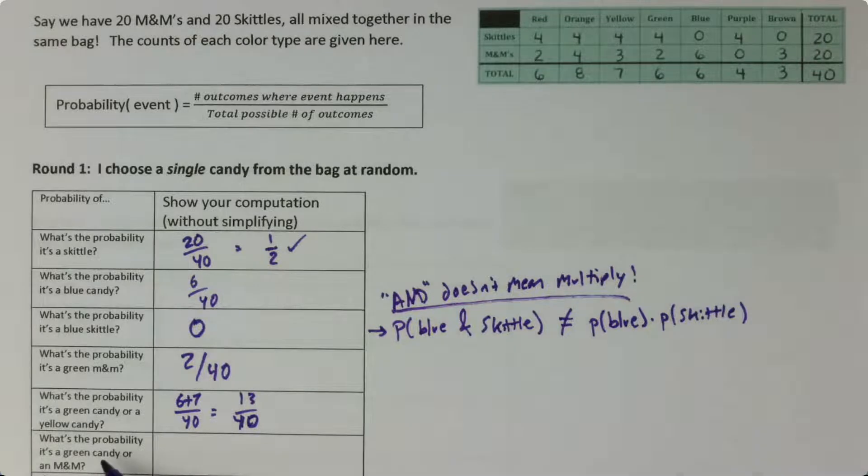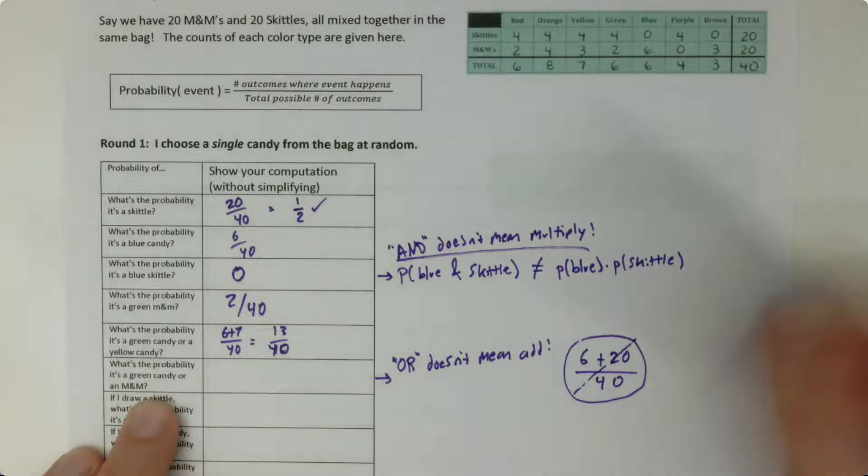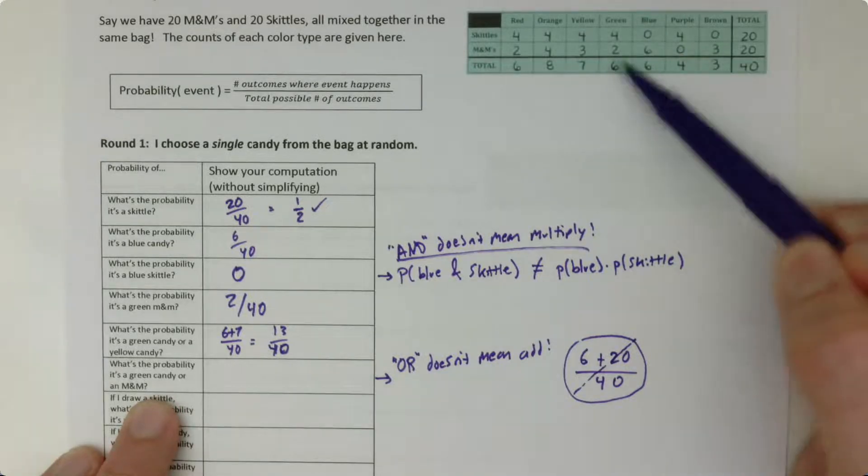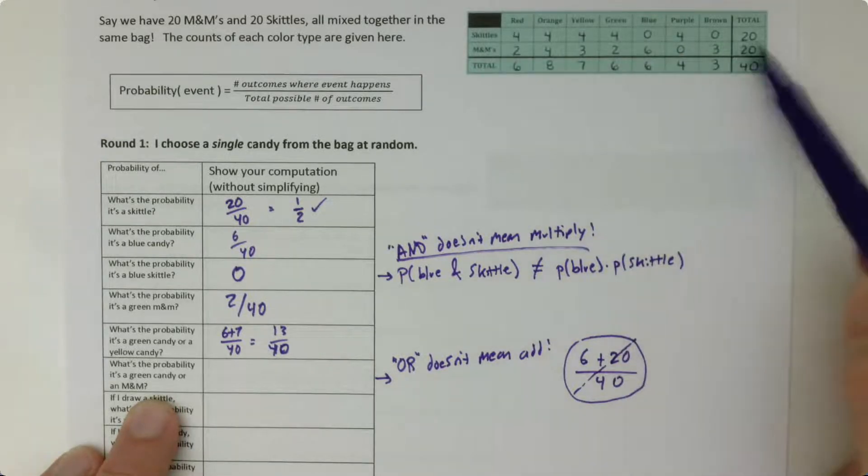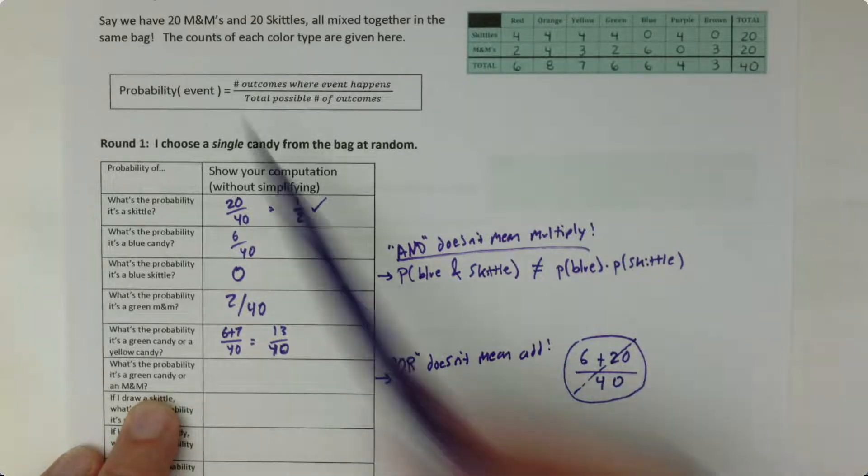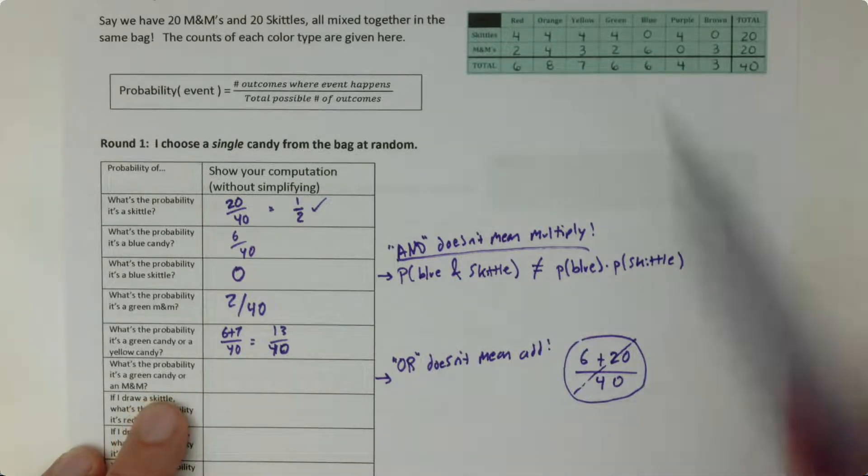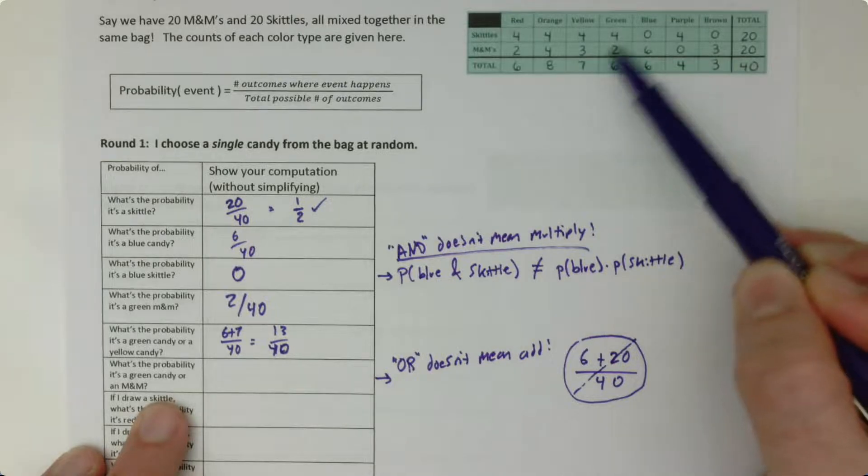But if I did the same thing here, if I just think, oh I just need to add things together, it would go completely wrong. Let's see why. So you might think, okay, there are 6 green candies, there are 20 M&Ms, so let's add the 6 green candies to the 20 M&Ms, that's all the candies I could draw that are either green or M&Ms, and divide it by 40.